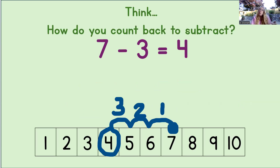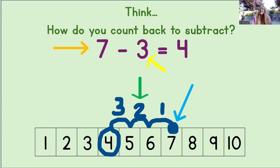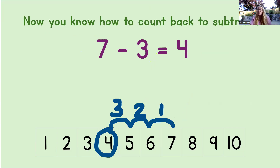Now, can you think — how do you count back to subtract? First, you look at the minuend. Then you mark it with the big dot on the number line. After that, you look at the subtrahend and you count back to subtract. Then you circle where you land and finally write it into the equation. That's how we count back to subtract. Now you know how to count back to subtract.